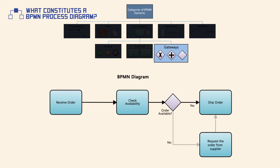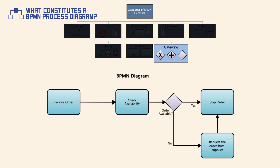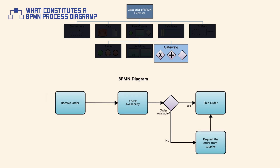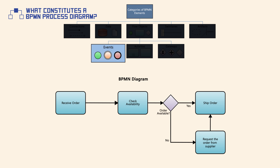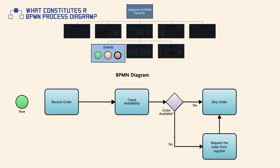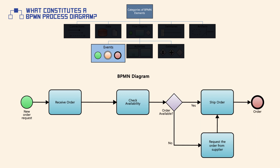A gateway is used to split or merge multiple process flows. It determines the branching, forking, merging, and joining of a business process's path. An event represents something that starts a process, happens during the process, or represents an end state of a process.